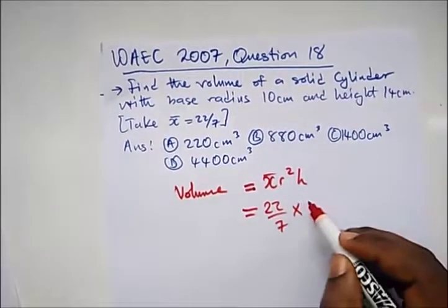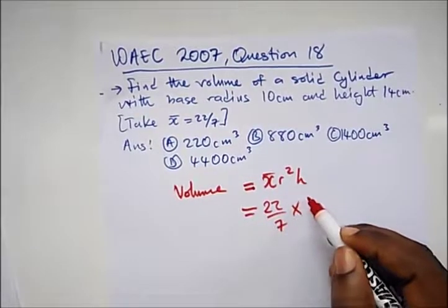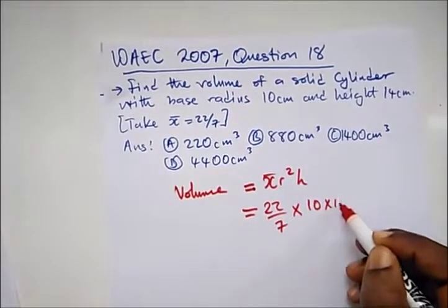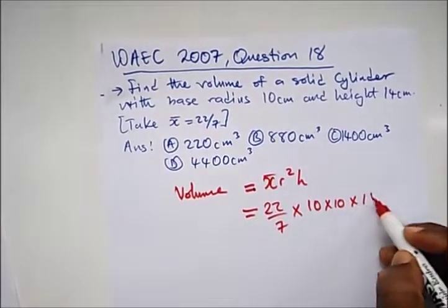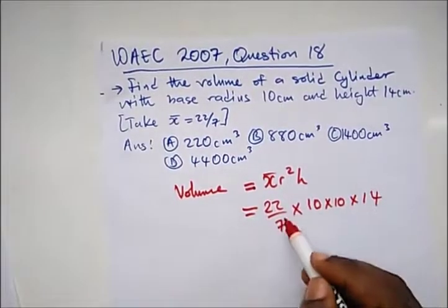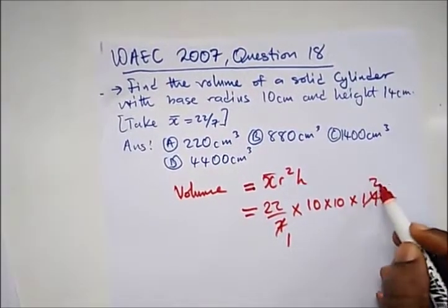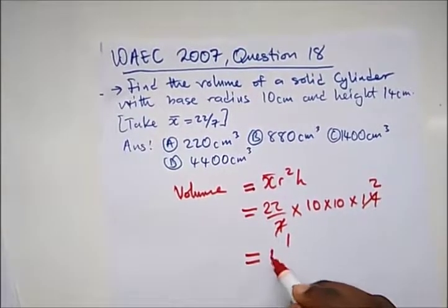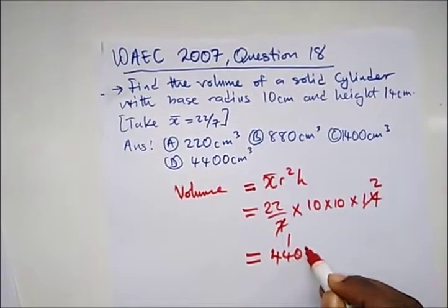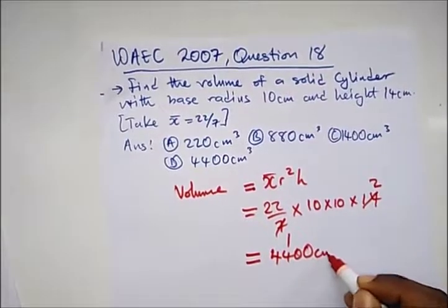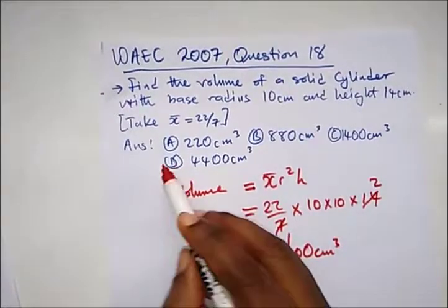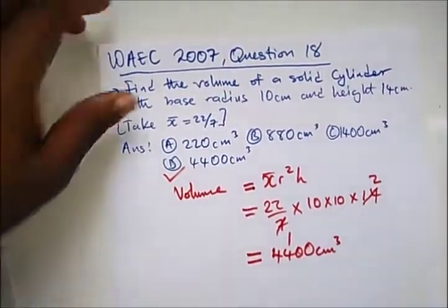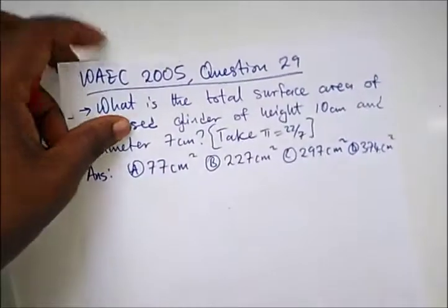We already given the radius and π as 22 over 7. So this is straightforward. Radius 10 centimeters, that's 10 times 10, and what's our height? 14. So all we need to do is cancel. This will cancel here, and this is 2. When we multiply this throughout, we're going to get 4400 centimeters cubed.